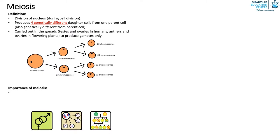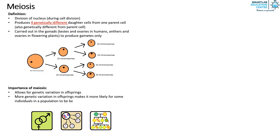Meiosis allows for genetic variation in offspring, making it more likely for some individuals in a population to be better adapted to the environment. We will explain more on this in the later part of this video. Meiosis is also needed for sexual reproduction.